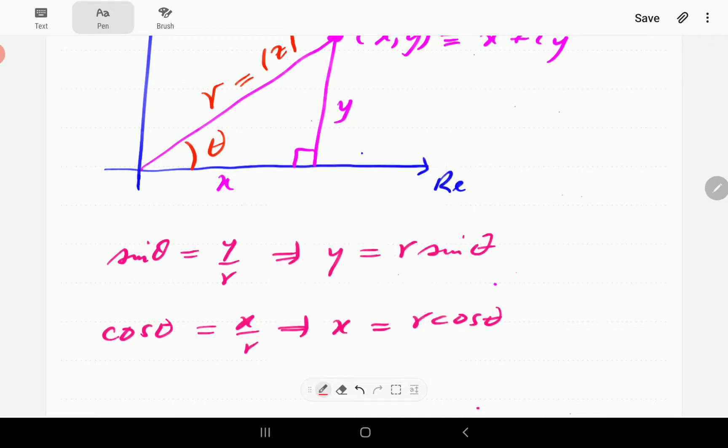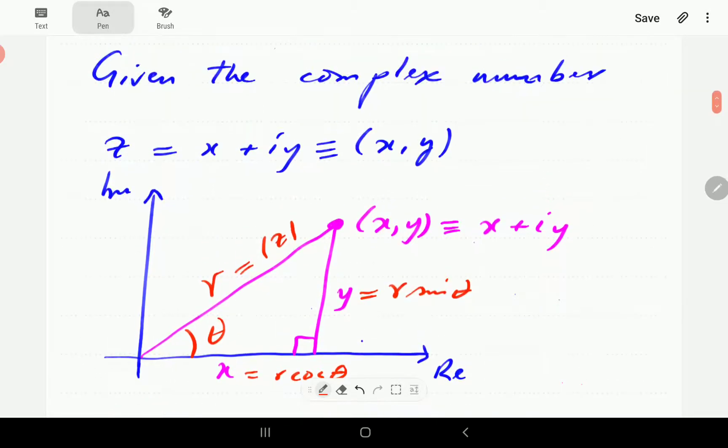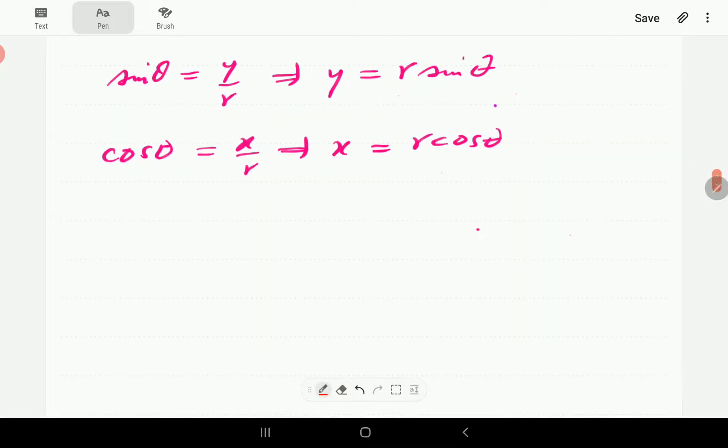So what this is saying is that this number here, y, we can write as r sine theta. This number here, we can write as r cosine theta. So going back to this complex number here, this is what we can do.